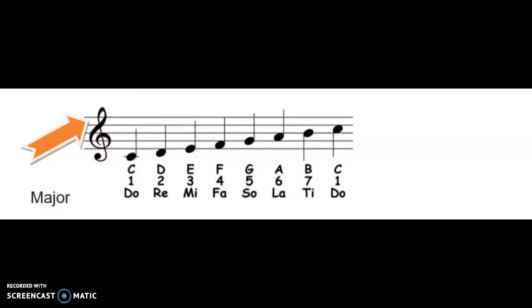The next scale is the major scale. For IGCSE, you need to know your four sharps and four flats. For the majors, I'm sure that you know what a major scale is — Do, Re, Mi, Fa, Sol, La, Ti, Do.